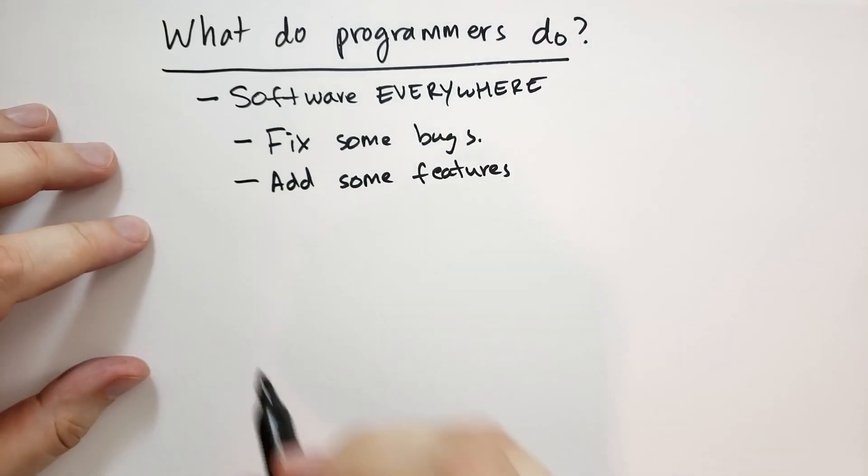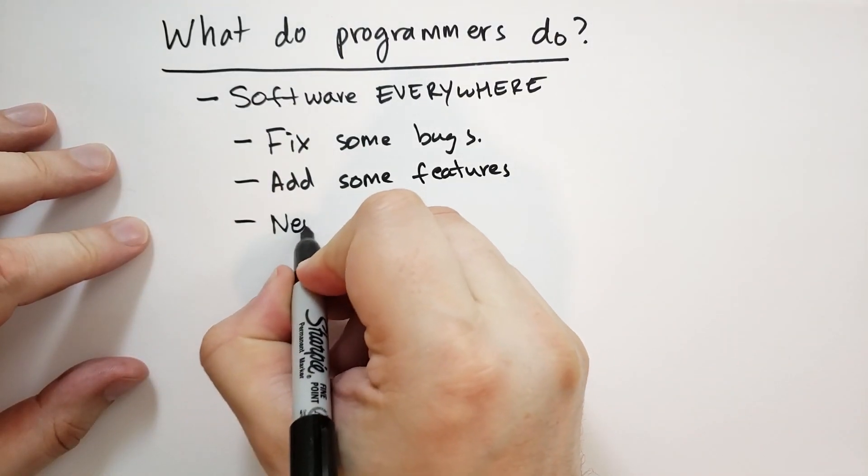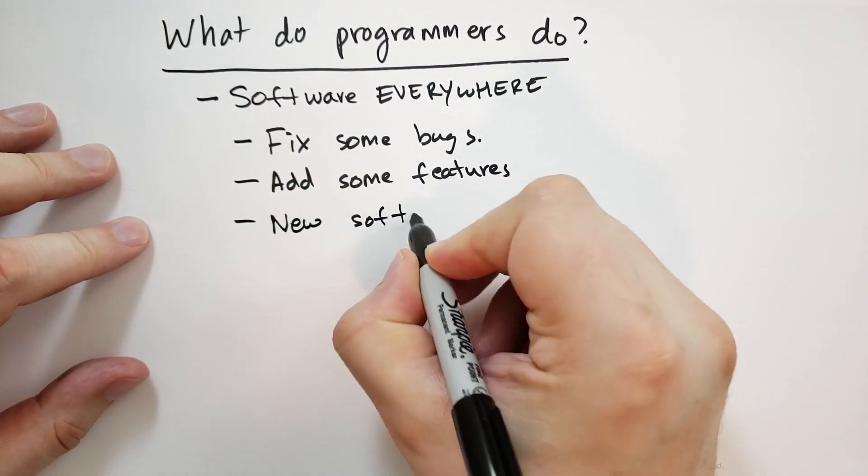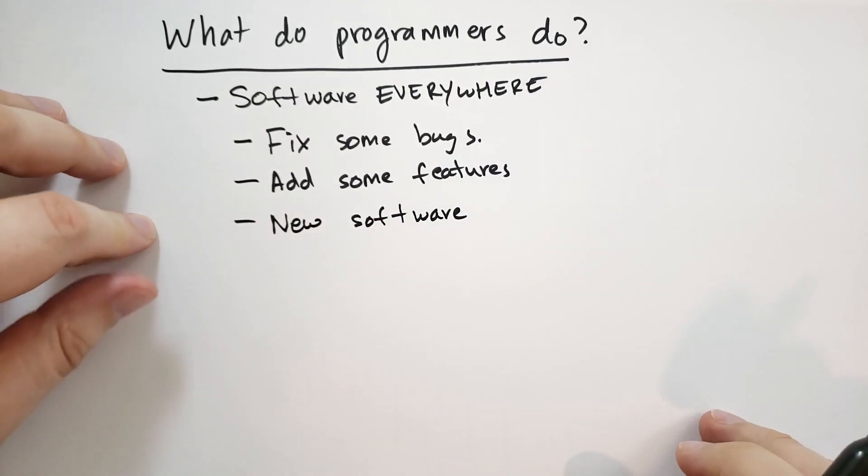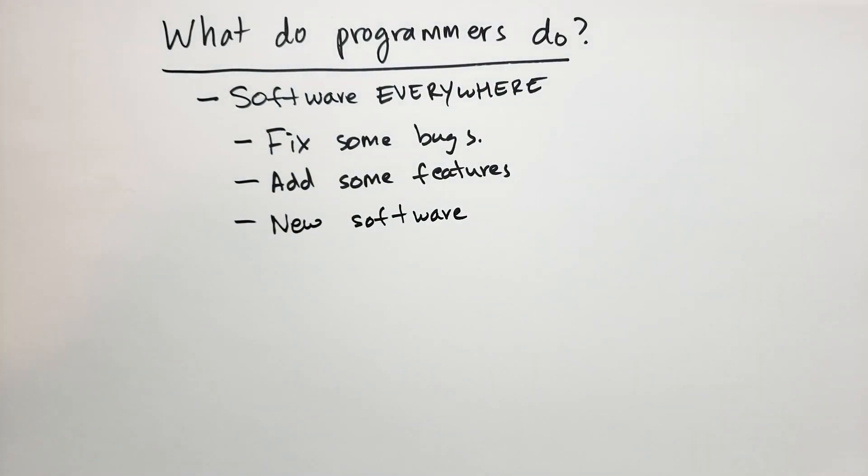And then sometimes you get to write new software, every once in a while. That's an exciting experience when you get to decide how to structure the project right this time, because you've seen it done wrong a thousand times and you've done it wrong a thousand times yourself. You want to do it right for the first time.